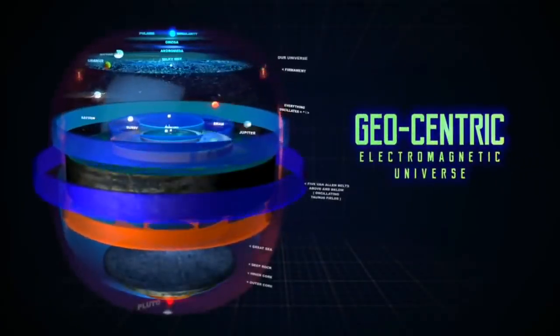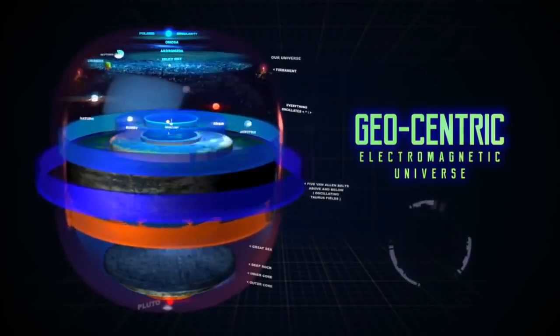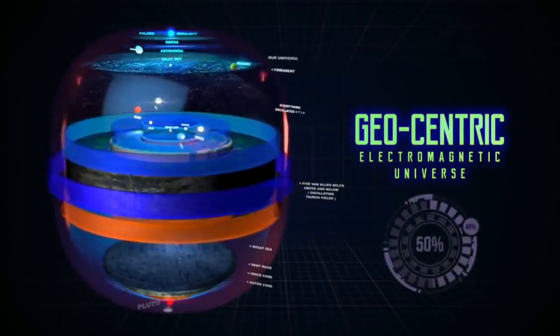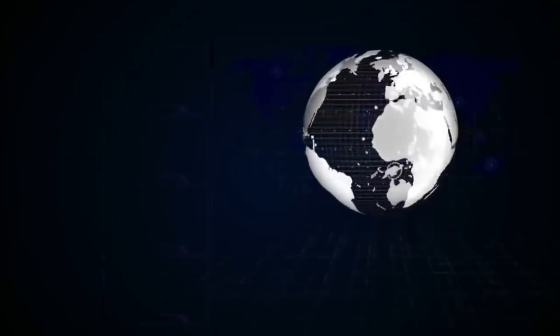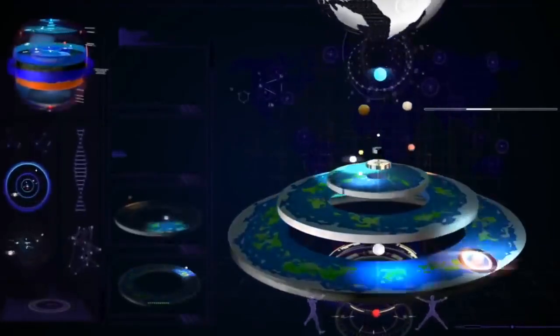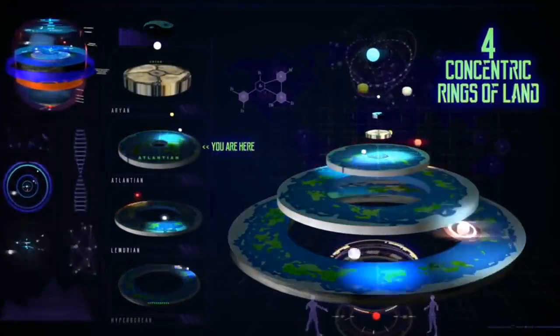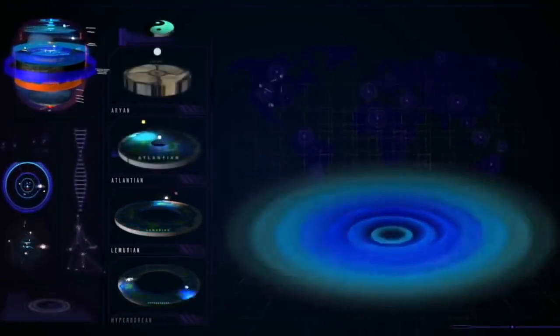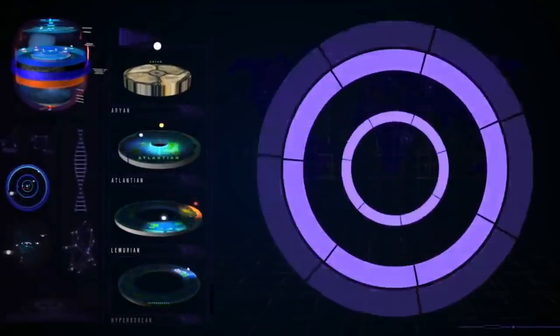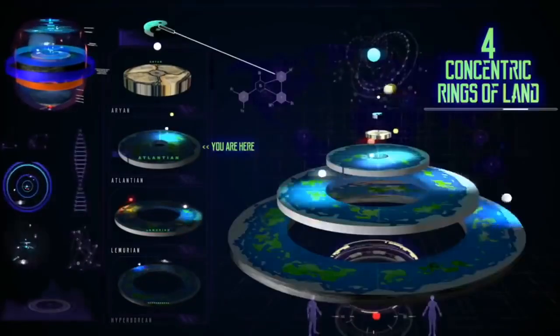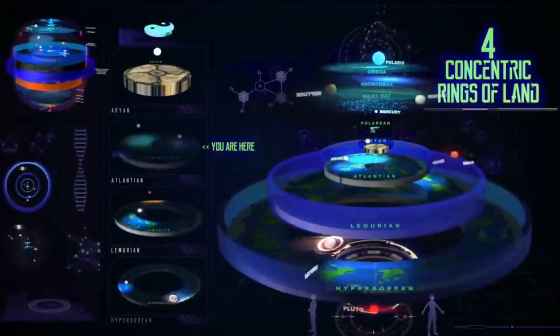Before we get into the details, it's extremely important that you have a full understanding of the construct of our geocentric electromagnetic universe. If you're not familiar with this geocentric model, we're going to leave links in the description for you to catch up on the basics. In short, we're not on a ball. Our Earth currently consists of four concentric rings of physical land beginning and spiraling out from the zero point axis at the center of the plane.